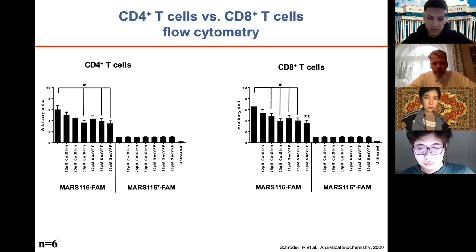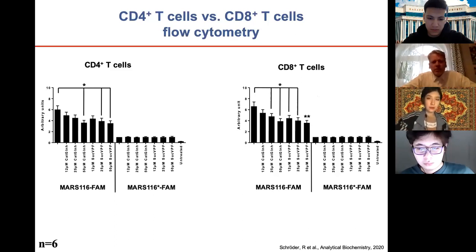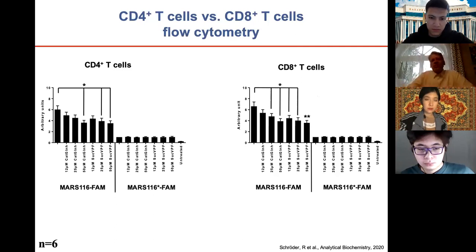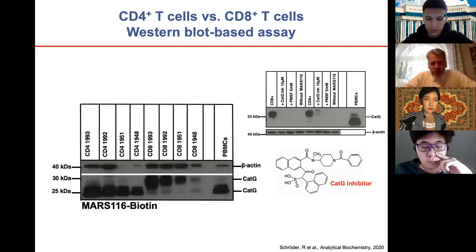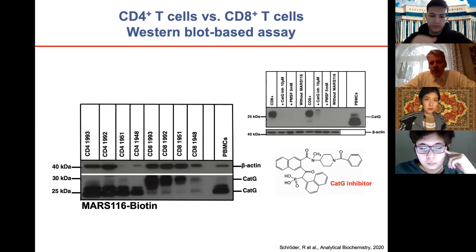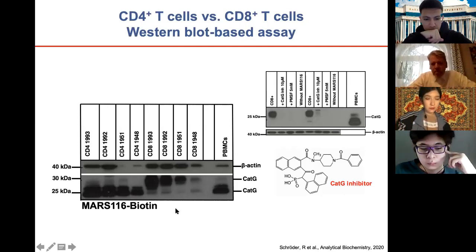What's new here? First, we can use this activity-based probe in flow cytometry not only on the cell surface but now also intracellularly. Second, as an immunologist it's also new that CD4-positive and CD8-positive T cells harbor cathepsin G. Of course, reviewers asked for proof of principle using a different method to confirm these cells are truly positive for cathepsin G.